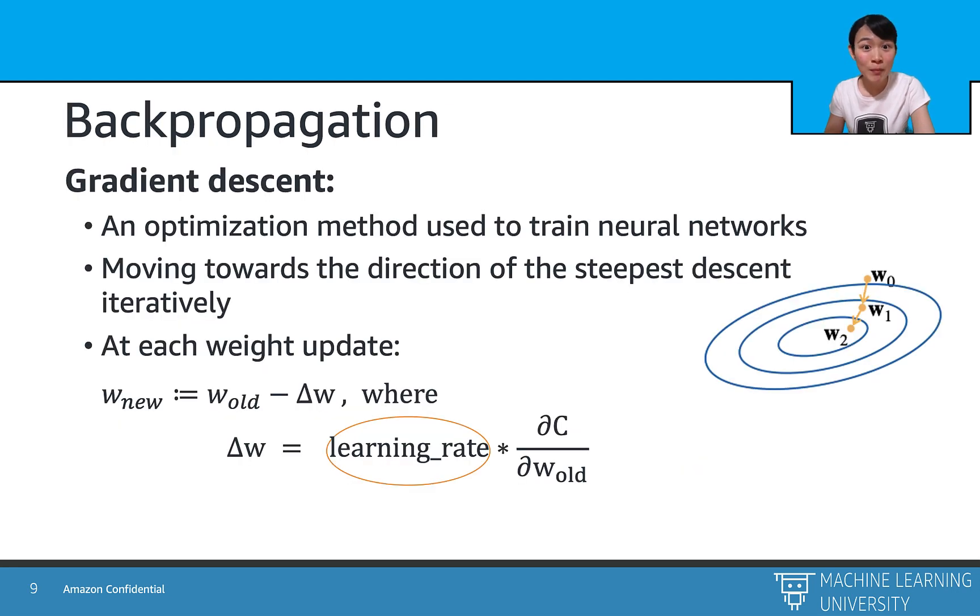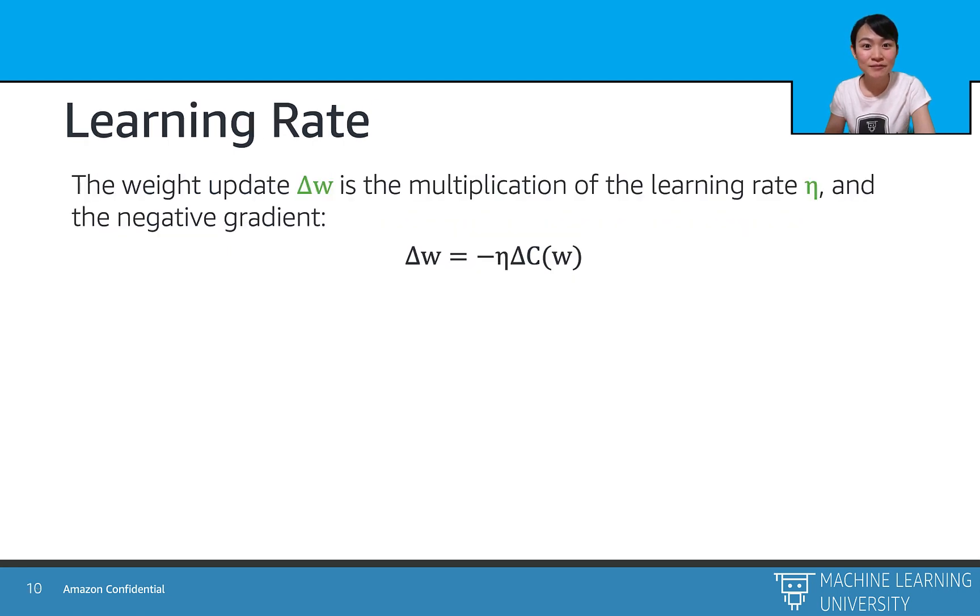Now, coming back to our gradient descent formula, we also have this term called learning rate. So what does learning rate do? Learning rate controls the speed of the weight update. So the final update, the delta w, depends on the learning rate times the gradient. This is because the pure gradient itself is usually too big to miss the global minimum.